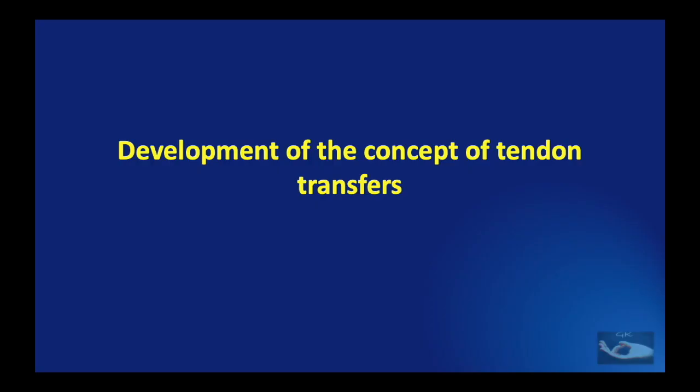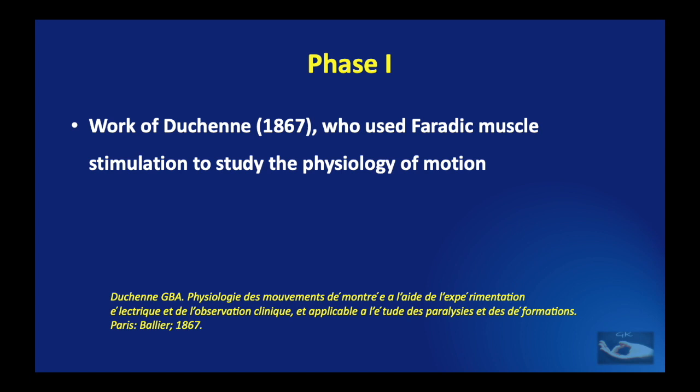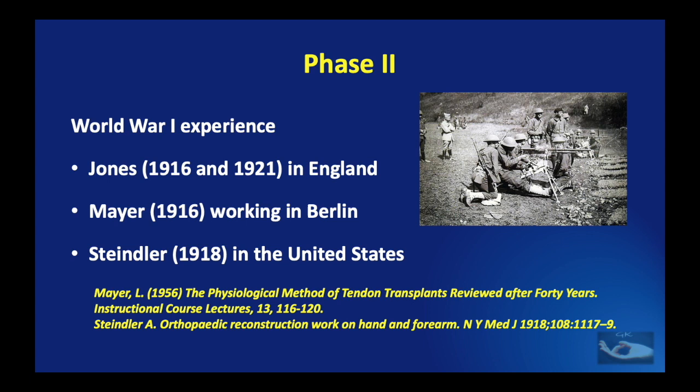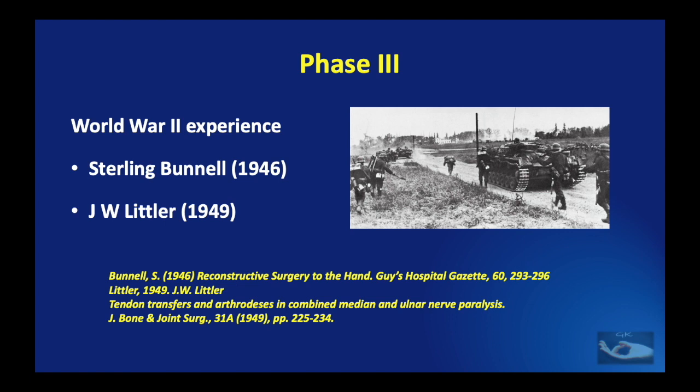Before we proceed to learning about tendon transfers in the upper extremity, let us see how the development of the concept of tendon transfers took place. There were three phases in the development of this concept. The first was the work by Duchesne way back in 1867, who used pharadic muscle stimulation to study the physiology of motion. With World War I came the second phase, when Jones in 1916 and 1921 was working on the tendon transfers for radial nerve palsy in England, while Mayer in 1916 was working in Berlin and Steindler in 1918 was working in the United States — all going on almost simultaneously. These basic concepts were strengthened and used during the World War II experience by Sterling Bunnell in 1946 and J.W. Littler in 1949. These concepts have strengthened since then and now tendon transfers form a part of the routine management in upper extremity surgery.